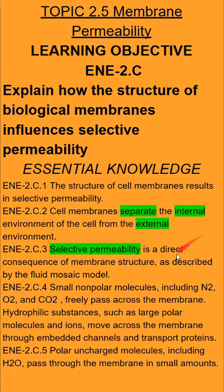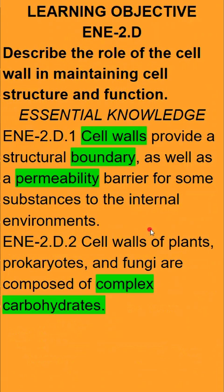There are important permeability things to understand about membranes: which things can go in, what things can go out, which things need protein channels to help them through. But then cell walls have complex carbohydrates found in plants, bacteria, and fungi. So I'll see you in the next one.